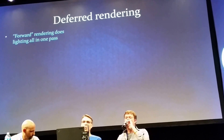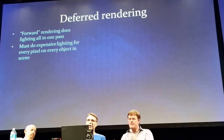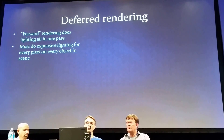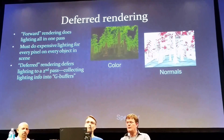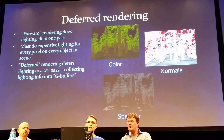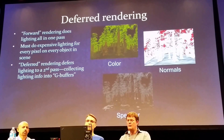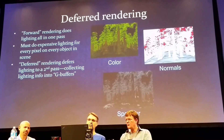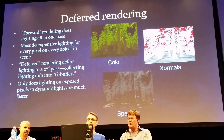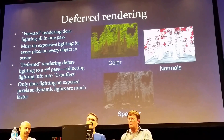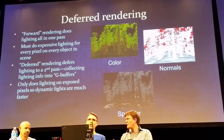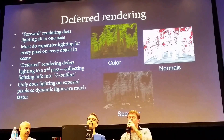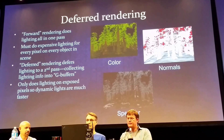In forward rendering, all of the lighting is done in one pass, including all the expensive lighting calculations for every single pixel on every single object in the scene. That can get really slow when you have a lot of dynamic moving lights. What a deferred renderer does is defer the lighting calculations to a second pass, collecting all that information in preparation for that lighting pass in what they call g-buffers. The advantage is that only the pixels you see in the scene have to have the lighting calculations done on them, all at one time, so you can have a lot more dynamic lights. That's why it was chosen for our game — we have a lot of dynamic content.